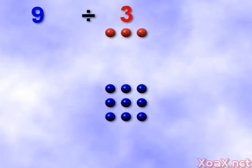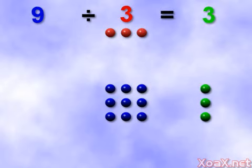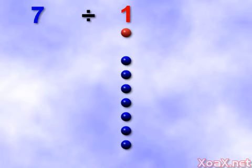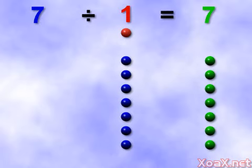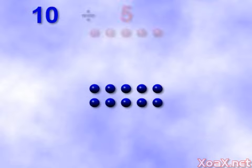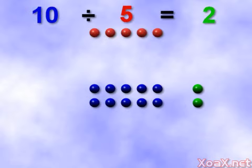9 divided by 3 equals 3. 7 divided by 1 equals 7. 10 divided by 5 equals 2.